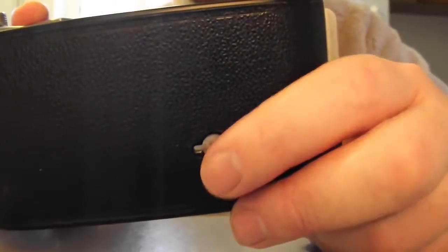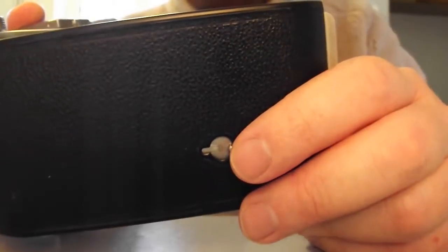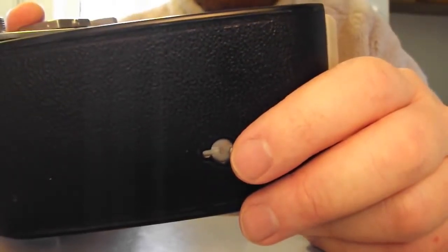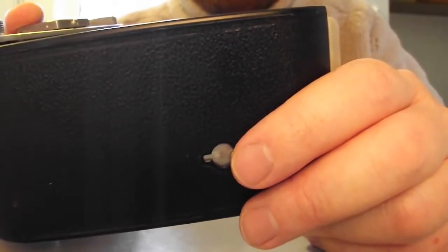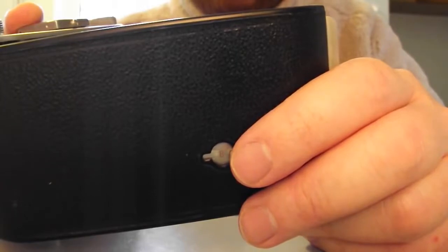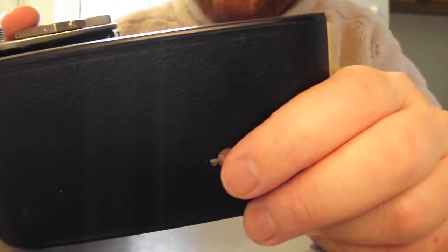The shot number, the frame number, or the photo number, whatever you want to call it, is printed on the backing paper on the back of the film. So you want to align it, every time you take a photo you want to wind it so that number is centered in that little ruby window. And then once you've centered it, shut it again.